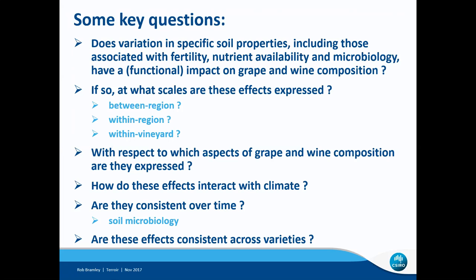How do these effects interact with climate? And are they consistent over time? In the case of soil microbiology this is a particularly important question, because whereas things like soil structure and texture don't change very much, soil microbiological composition can be quite dynamic and change markedly over the course of a season. And another question that I think is particularly important: are these various effects consistent across different varieties?